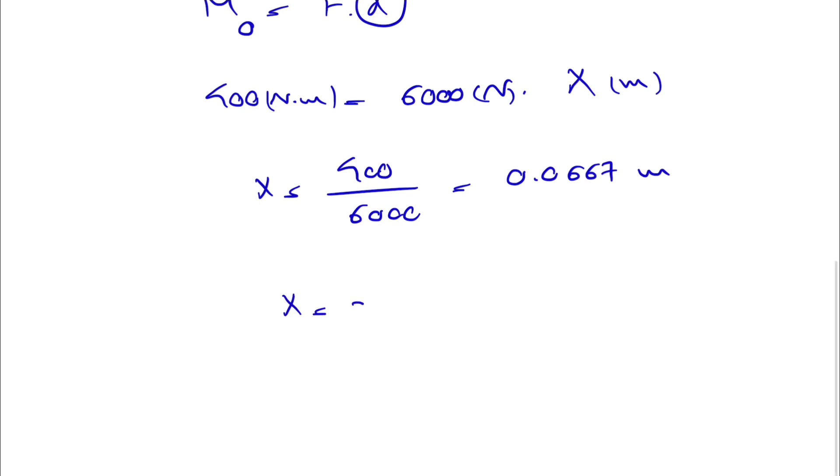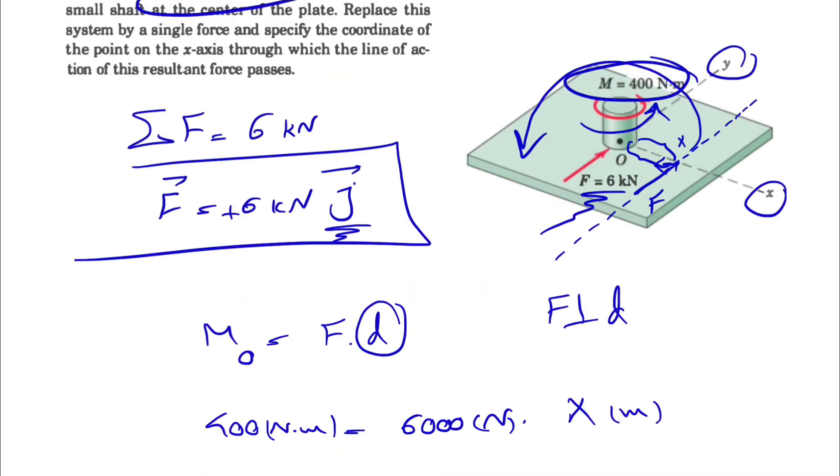We can write it down in millimeter if we multiply that by 1000, so 66.7 millimeter, which would be the coordinates of F on the x-axis.